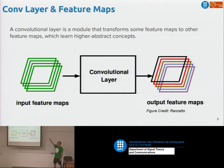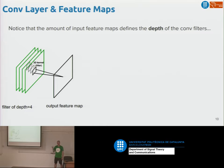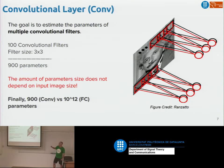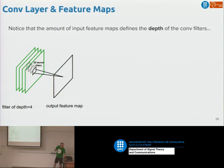Convolutional layers map input feature maps to output feature maps. If the input is a color image, it has three channels. Another concept that's quite misunderstood is that convolutional filters, even though I've drawn them as flat, are generally not flat. For a grayscale image the filter has depth one, but for an RGB image the convolutional filter also has a depth dimension matching the input channels.